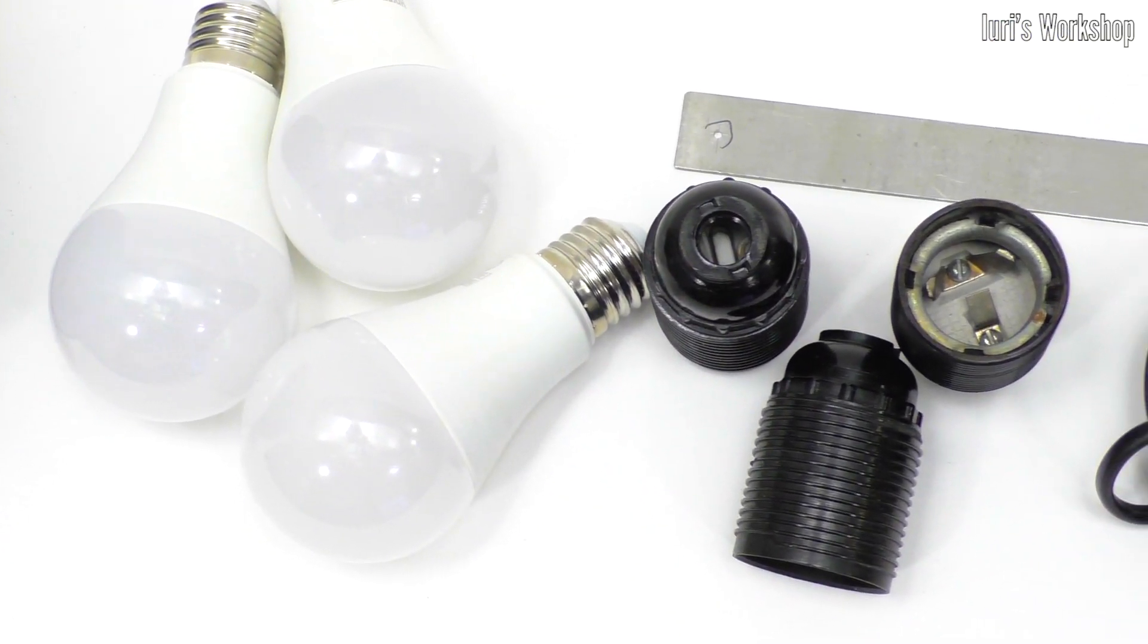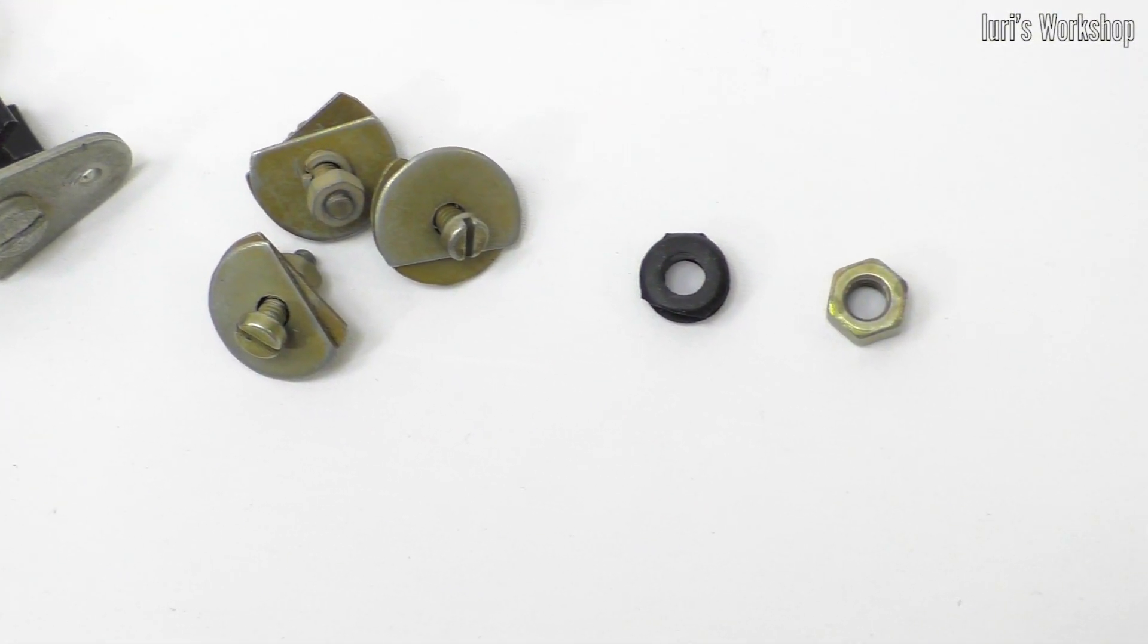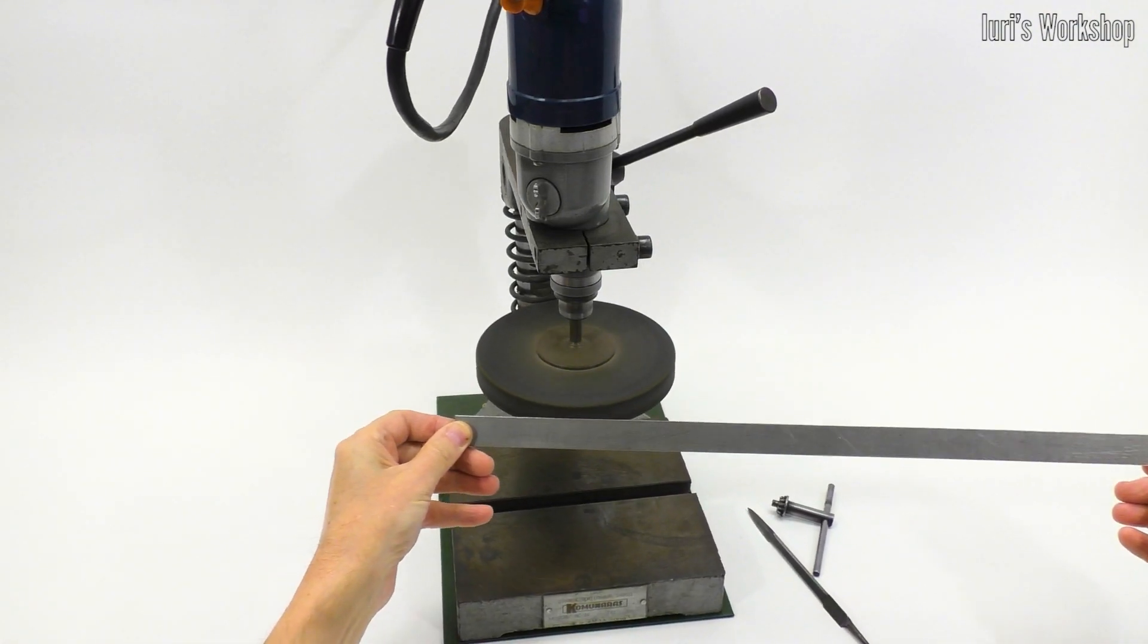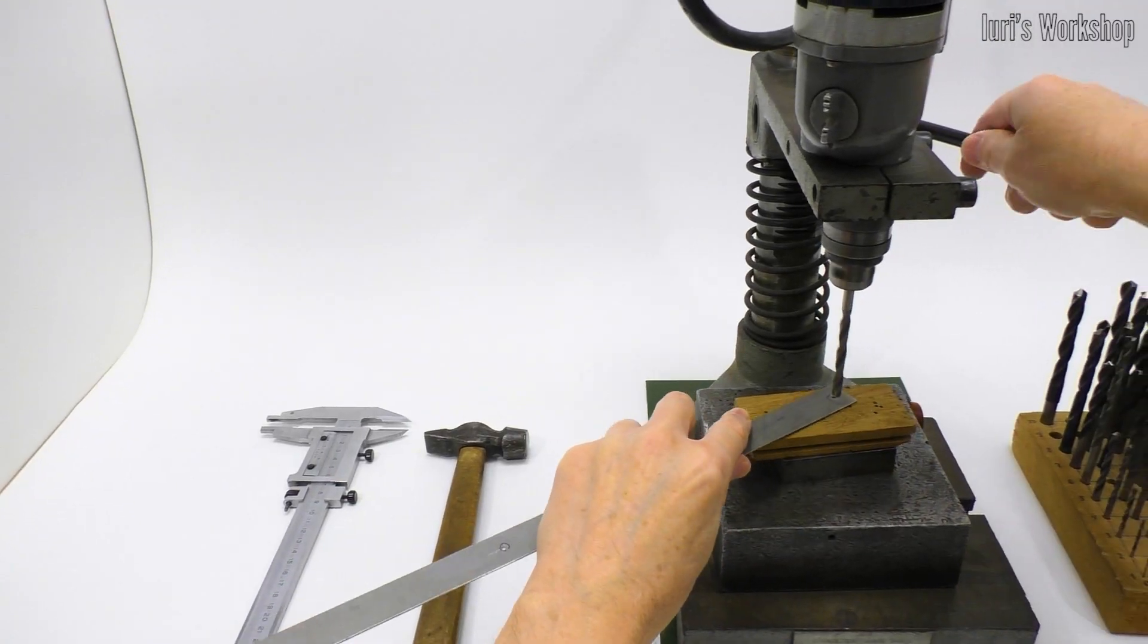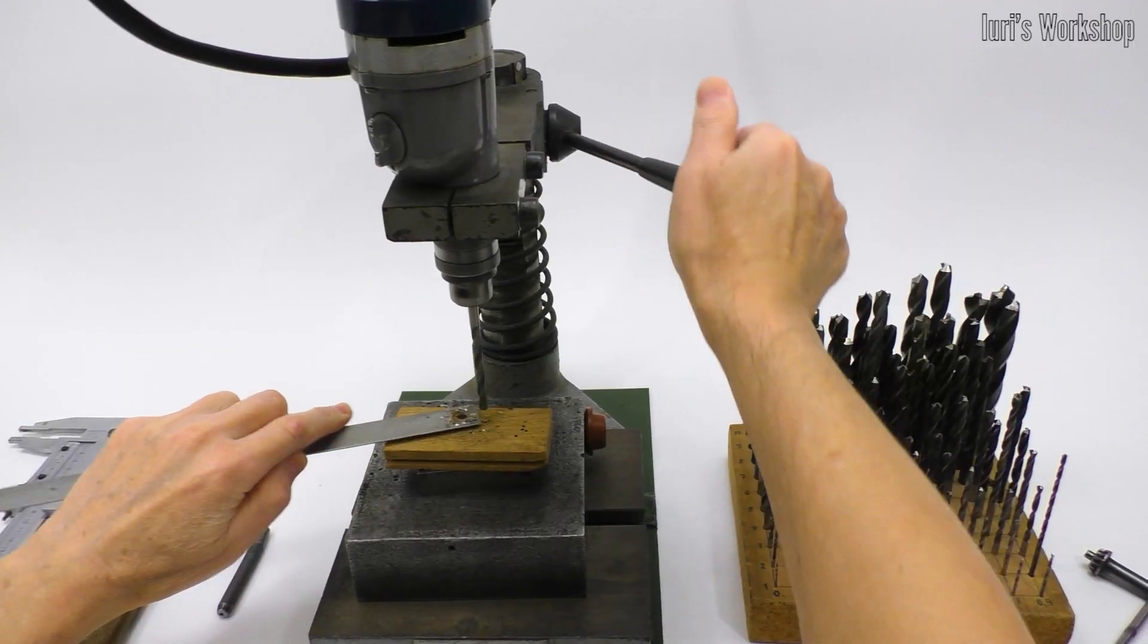To build a searchlight, I used the following materials and components. You can make this part from a steel plate one to two millimeters thick. Sketches of the main details are in the video description.